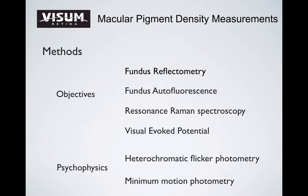In order to measure macular pigments, we would like to shortly present six methods available in the literature. The four objective methods are fundus reflectometry, fundus autofluorescence, resonance Raman spectroscopy, and visual evoked potential. The two psychophysics methods are heterochromatic flicker photometry and minimum motion photometry. We start by presenting fundus reflectometry.